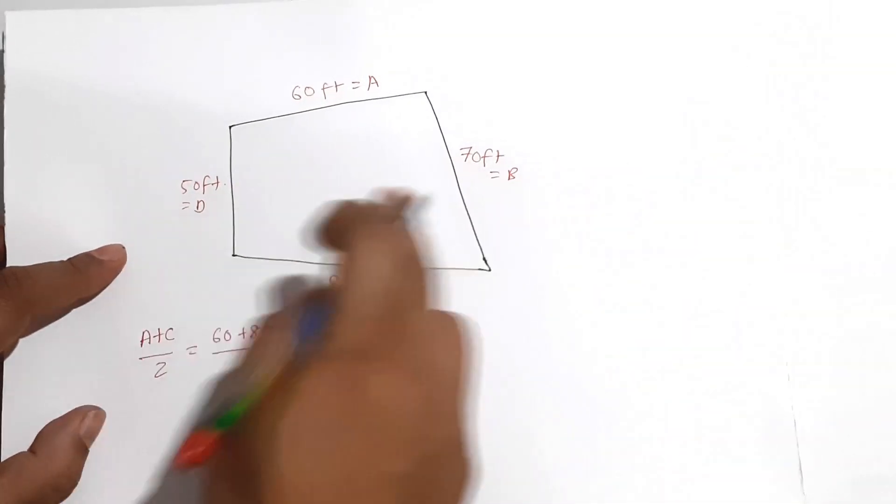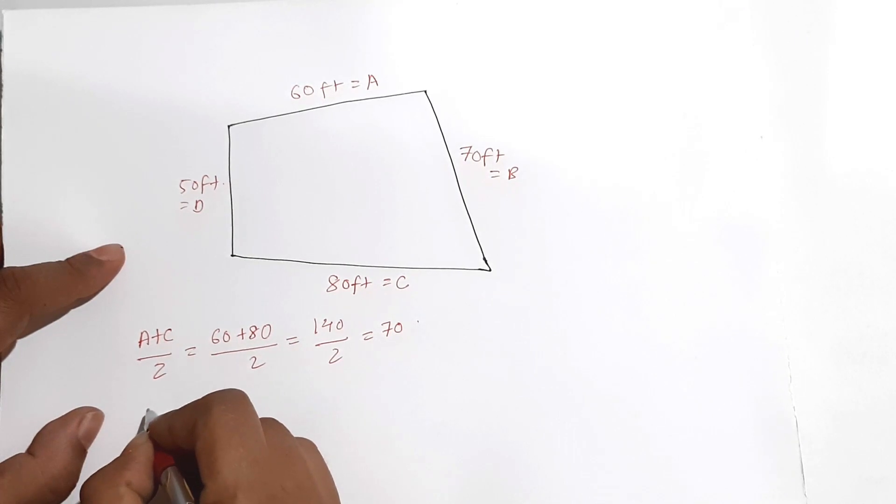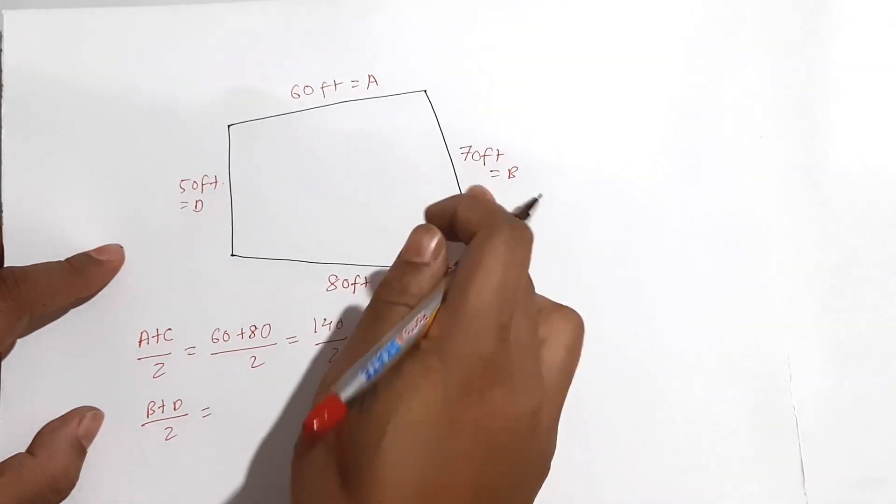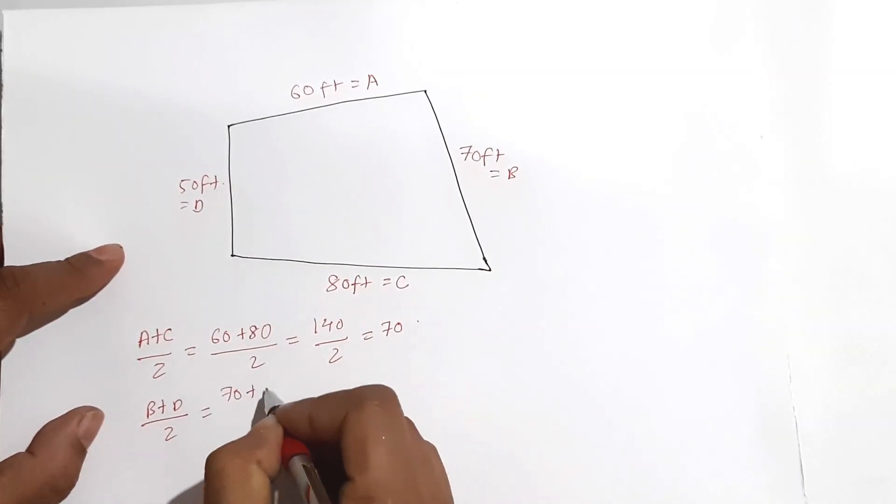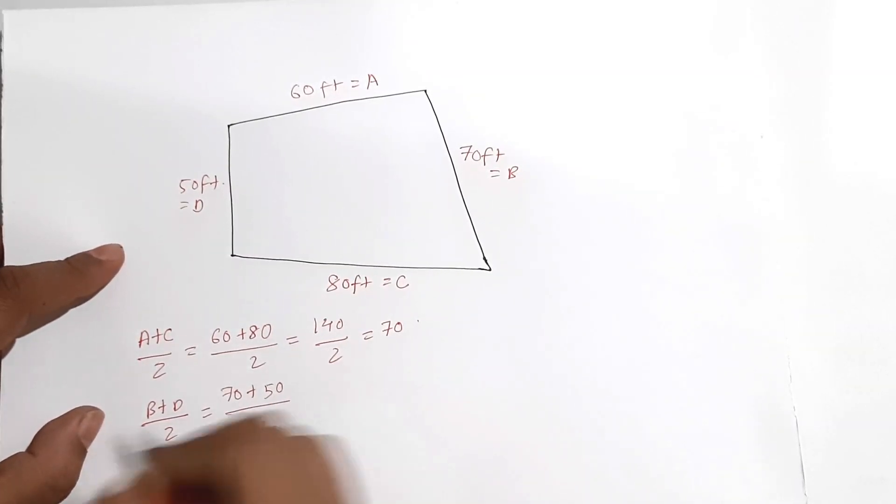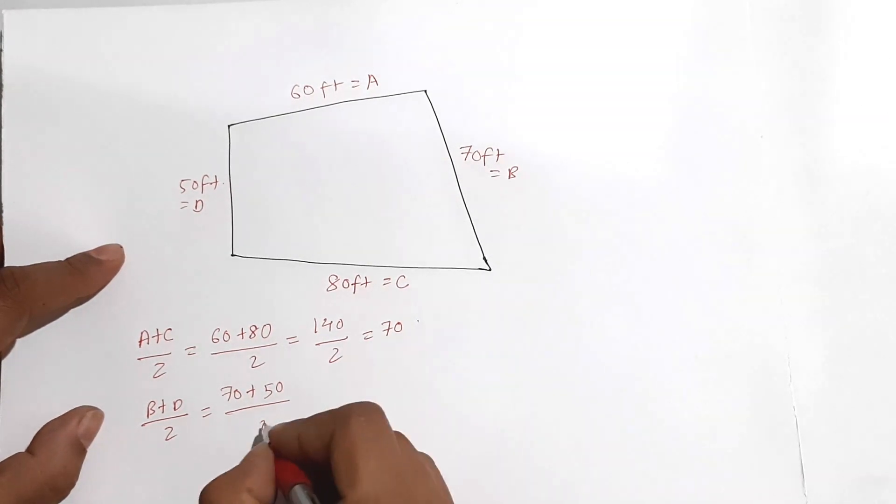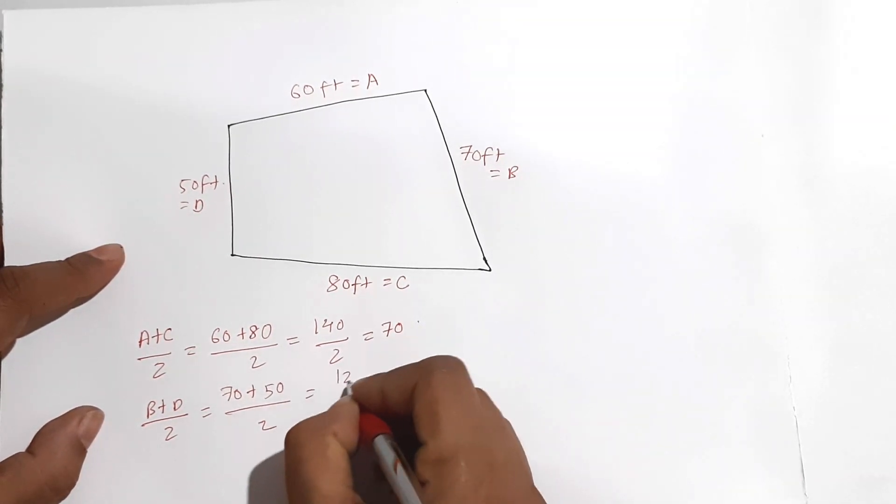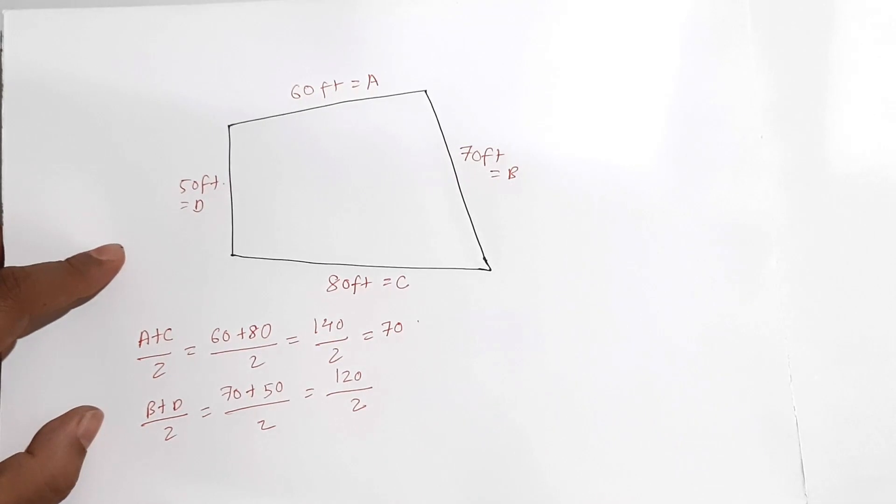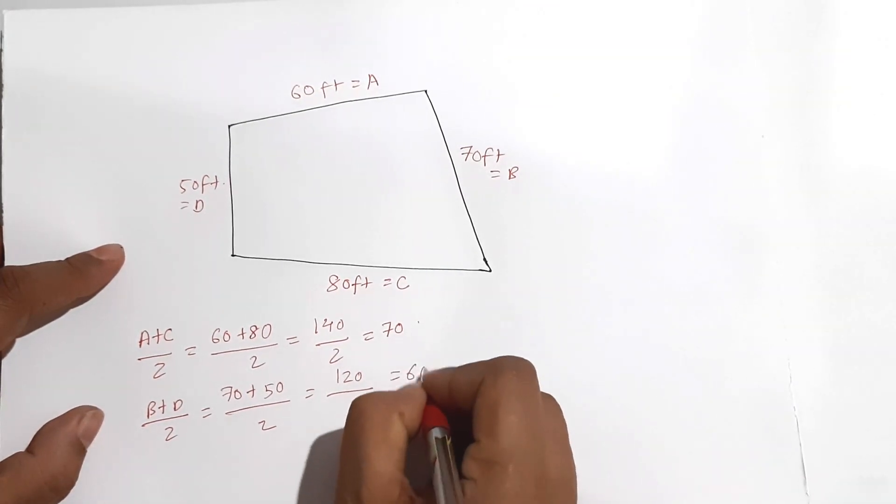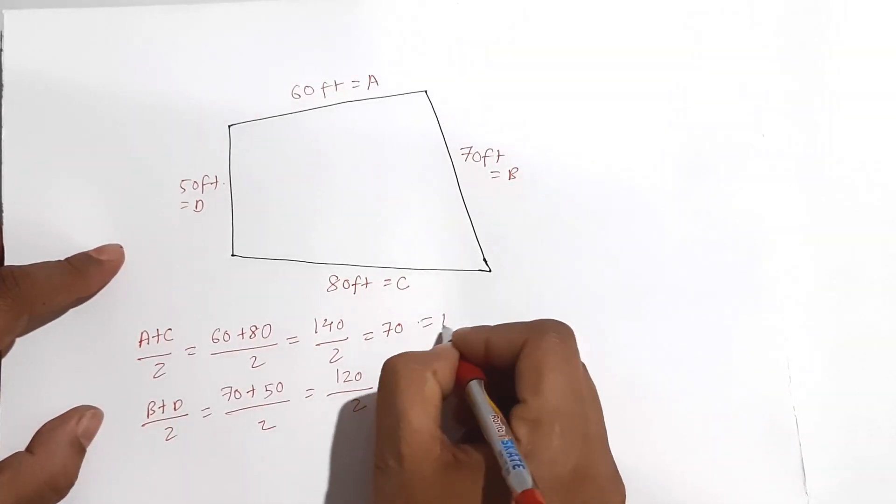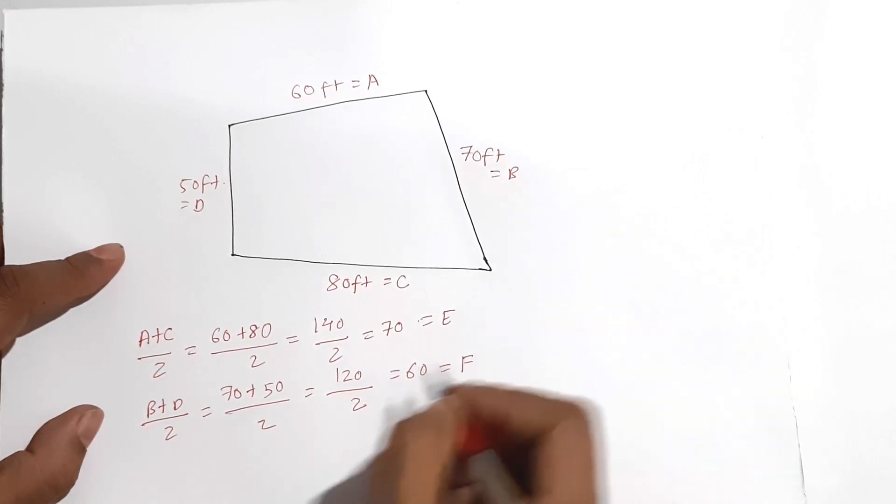Again, now this B plus D. So B plus D by 2 equal 70 plus 50 by 2. Equal 120 by 2. Equal 60. This is E. This is F.